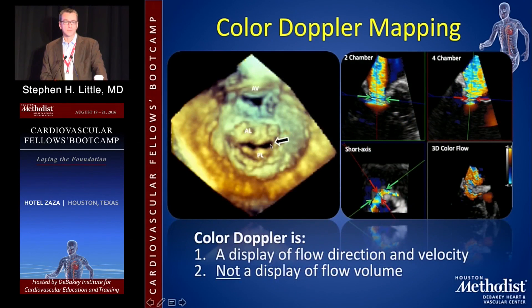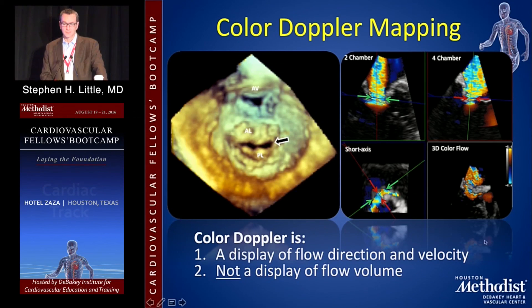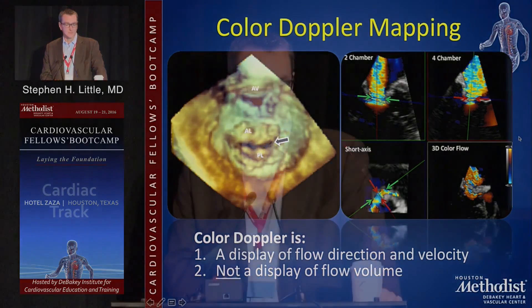Color Doppler is really just another way to display pulse wave Doppler — it shows direction and velocity, not volume. Many people think the color jet represents a volume of flow, but it does not. There are many ways a jet can fool you by playing with the gains, so be aware: what looks obvious isn't always obvious with color — it can be quite deceptive. In summary, we use ultrasound and Doppler to derive flow, stroke volume, regurgitant volume, area, and pressure.